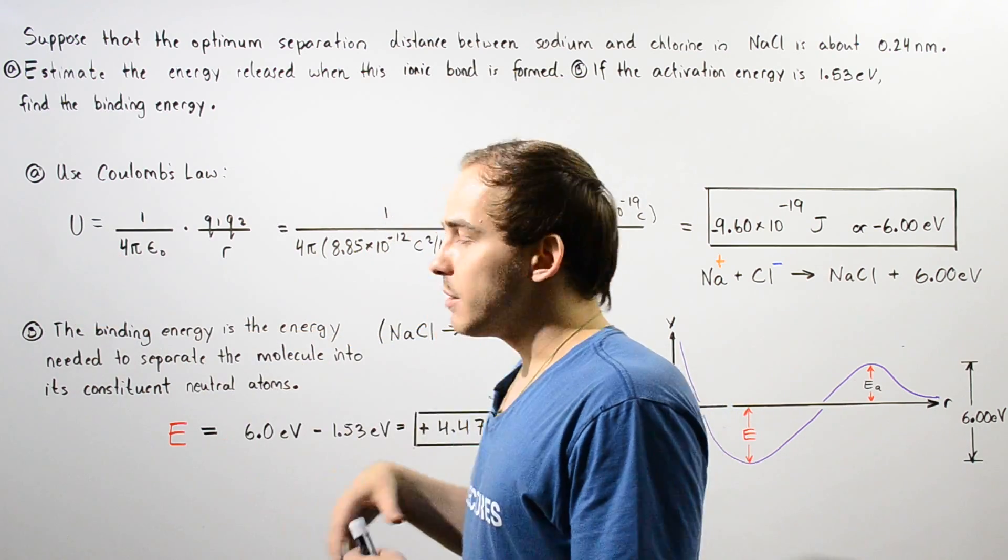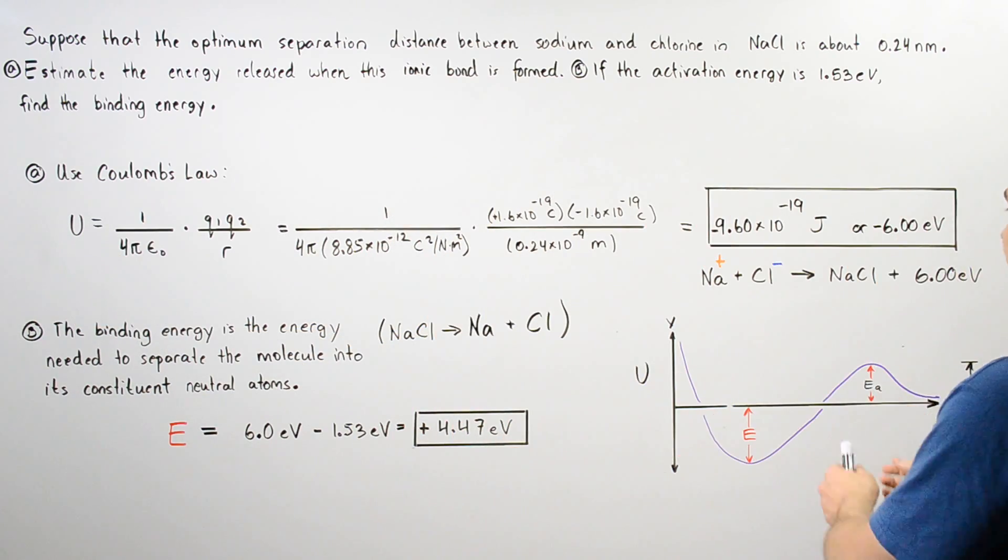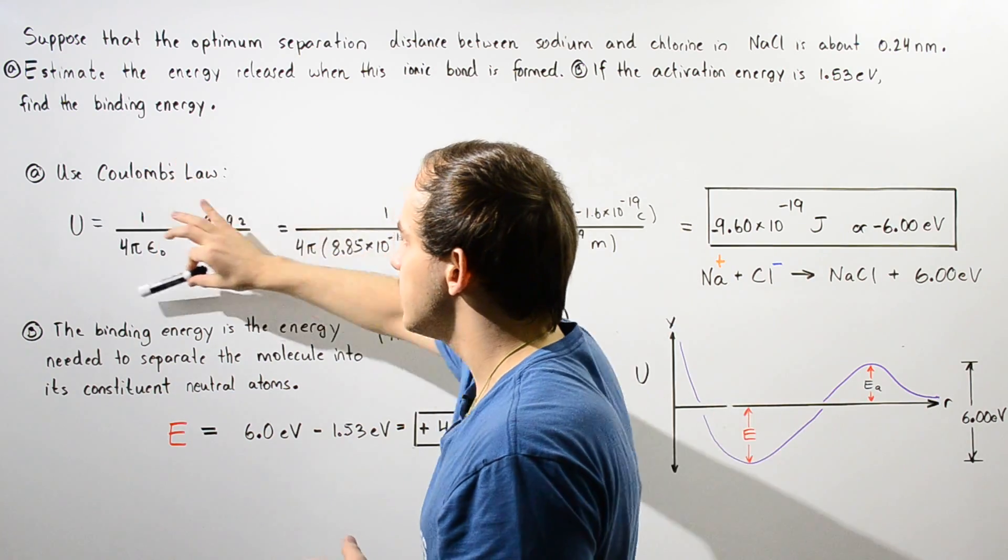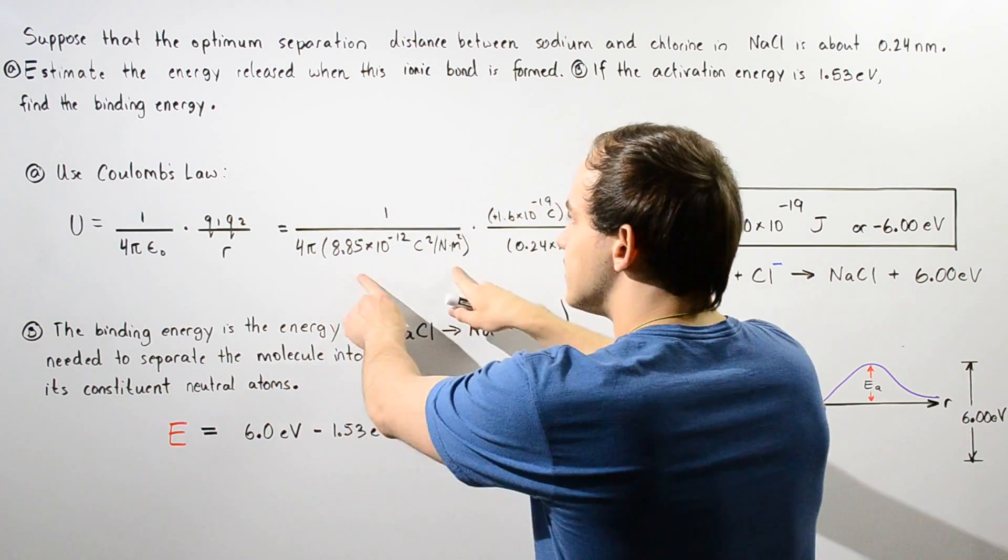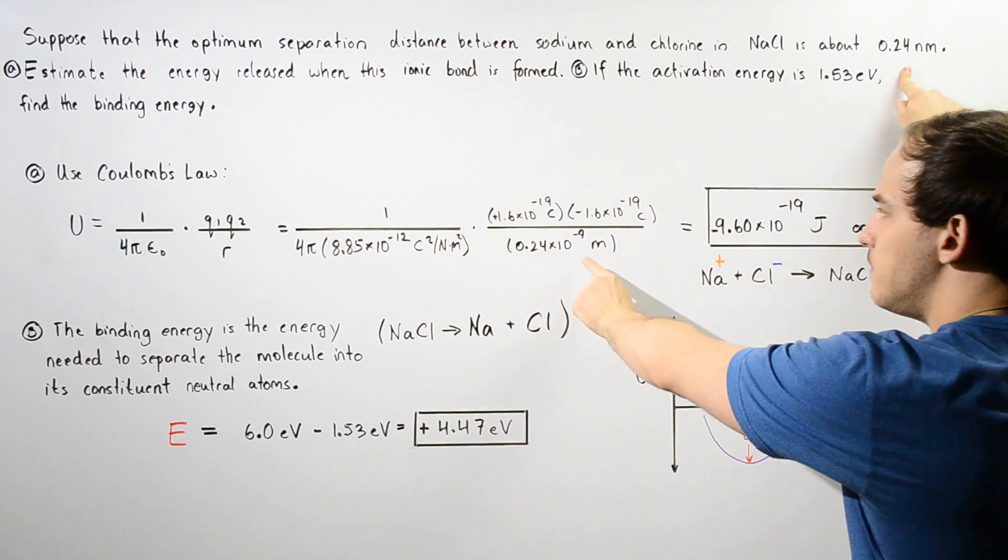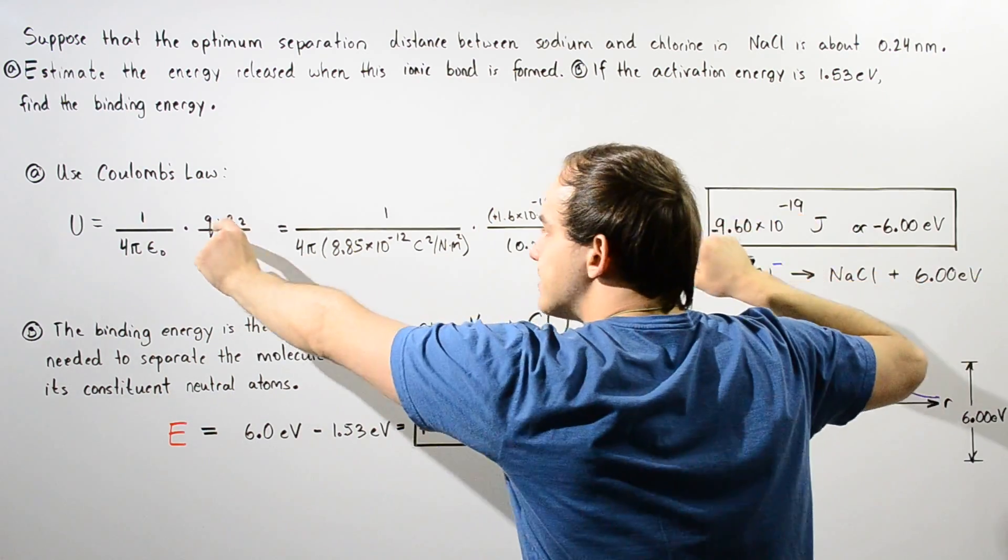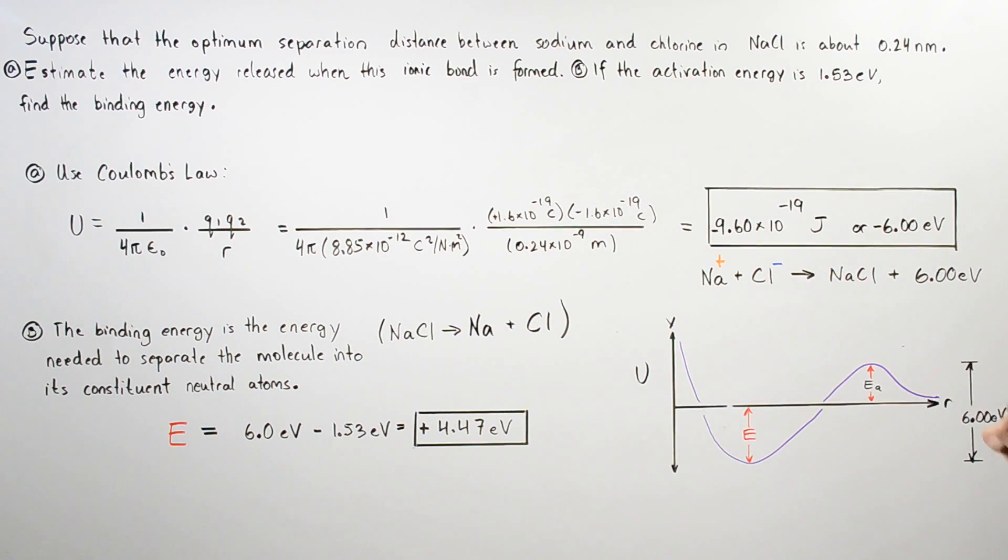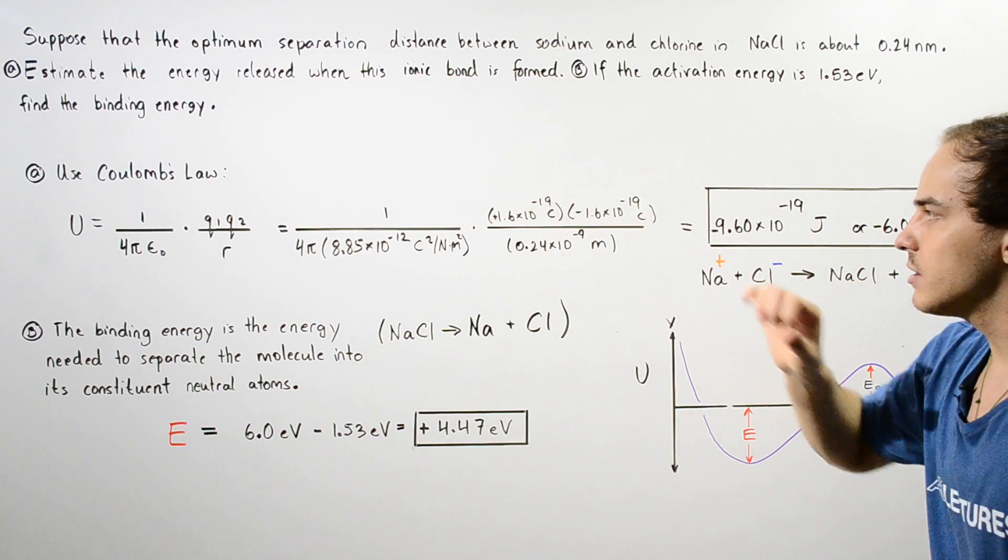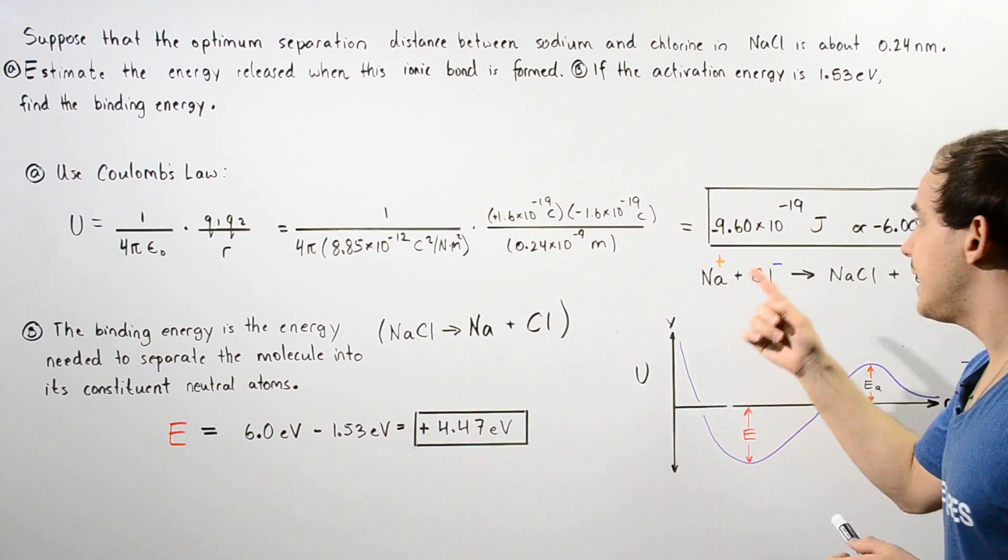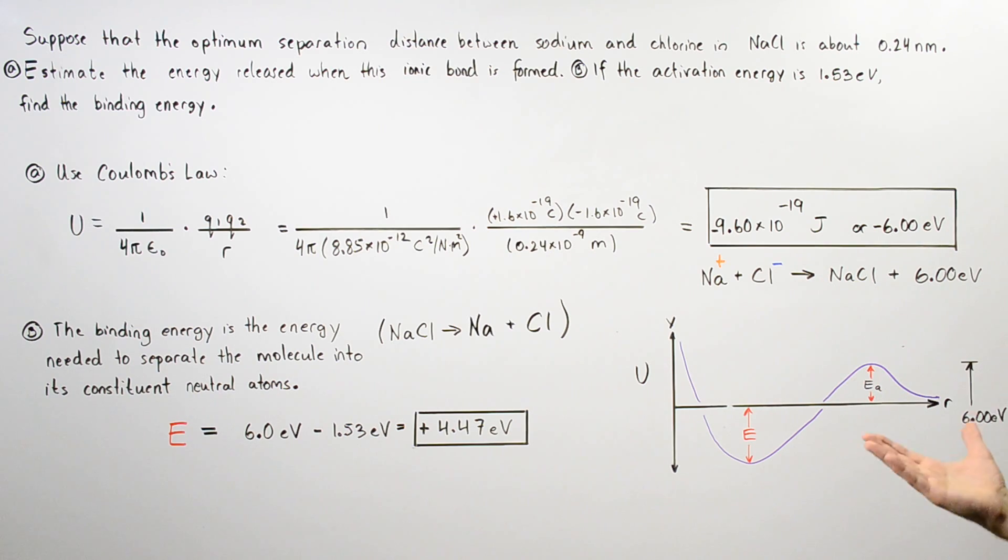Our energy, the potential energy of our final sodium chloride molecule, is equal to this equation: U = (1/4πε₀) × (Q1×Q2/R), where epsilon nought is this constant, R is the separation distance given in meters, Q1 is the charge on our sodium, and Q2 is the charge on our chloride. We plug these into our calculator and find that our energy is equal to negative 9.60 times 10 to negative 19 joules.